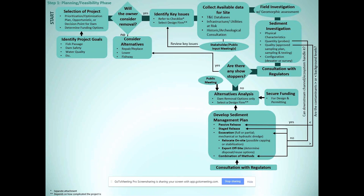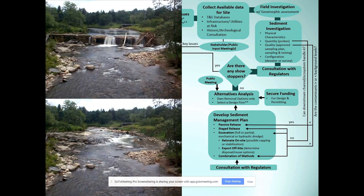At the end of the planning and feasibility phase we return to stakeholders to share findings and get input again — it's an educational process that goes both ways. One useful tool in those early meetings is photo renderings showing what a site might look like after removal. For example, one rendering showed a waterfall that existed back behind a dam, helping the community visualize the post-removal site. The next phase is design and permitting.